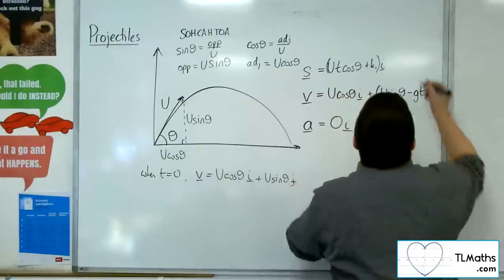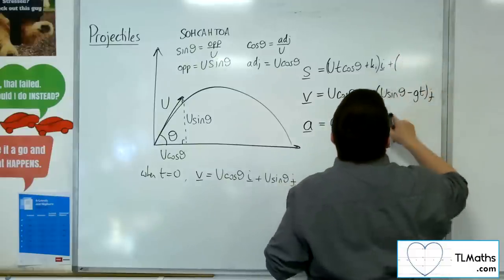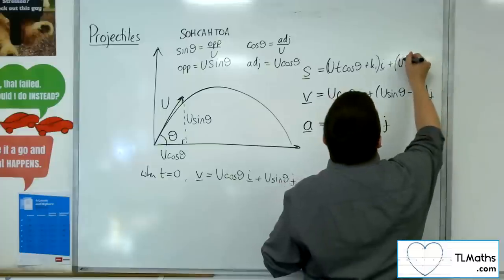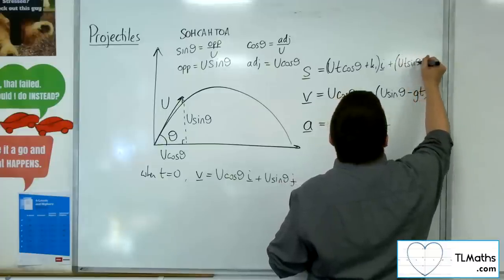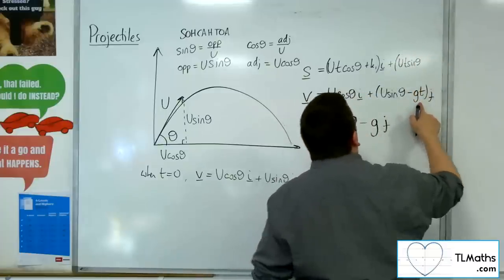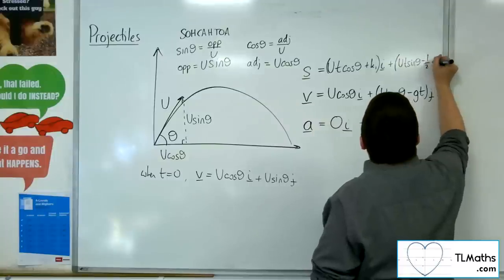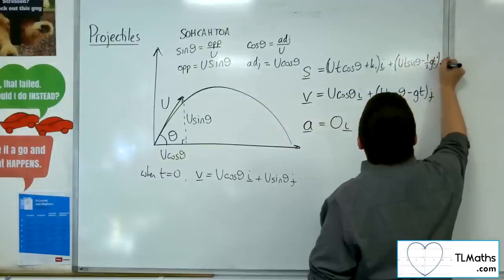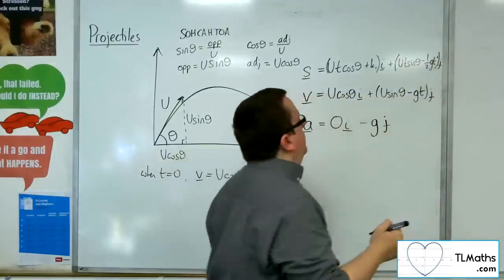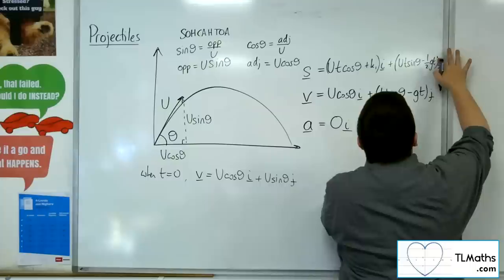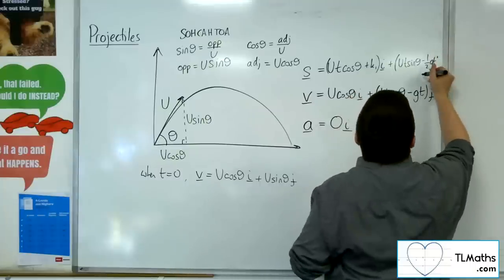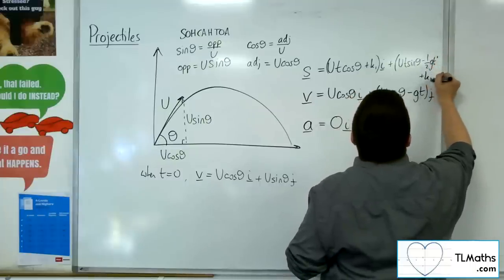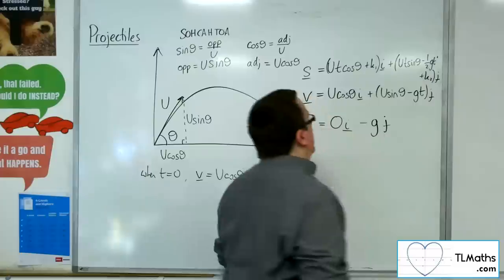Then, plus integrating this, u t sin theta, and integrating here, we get minus a half g t squared j. Oh, I forgot my constant of integration, plus k2 j. Didn't really leave myself enough room.